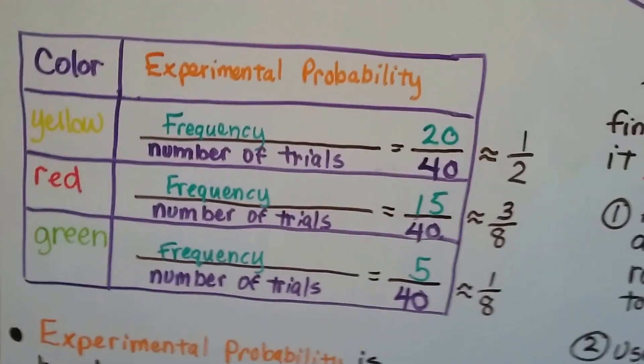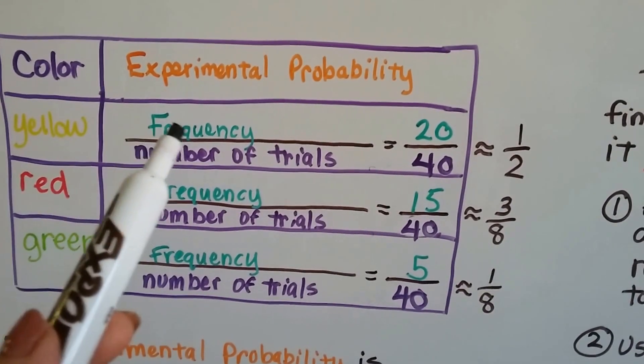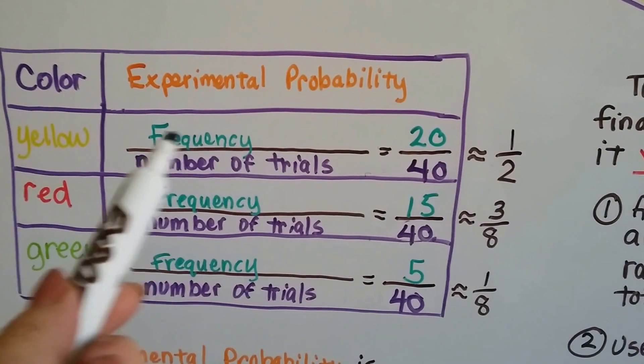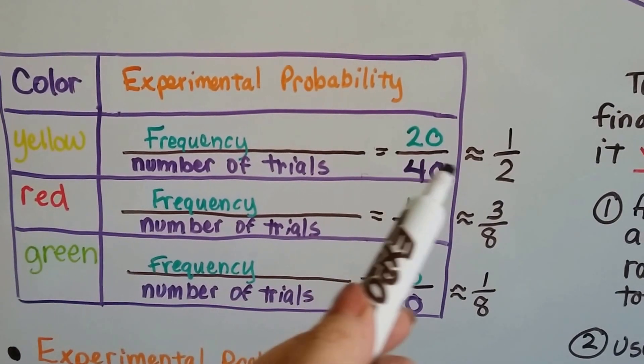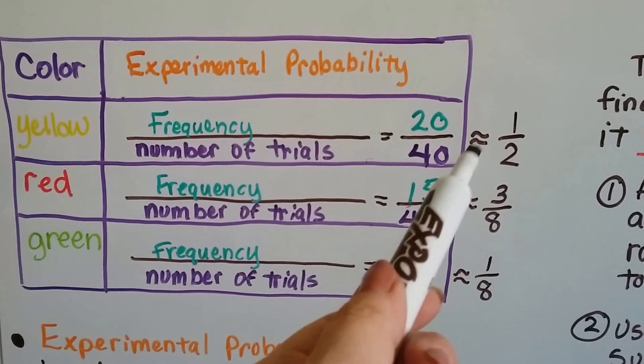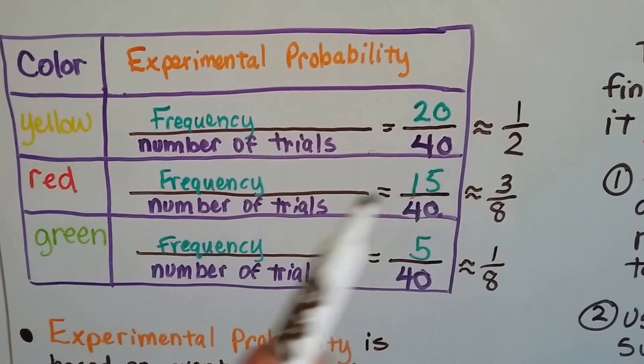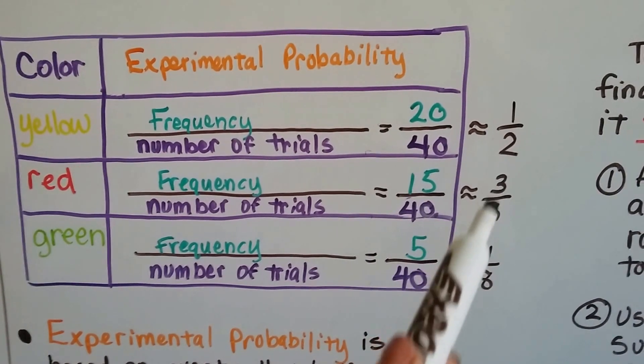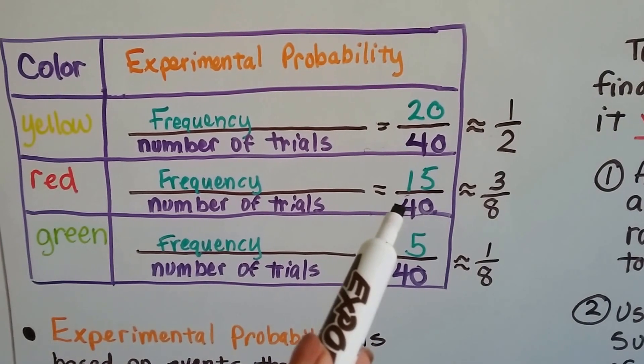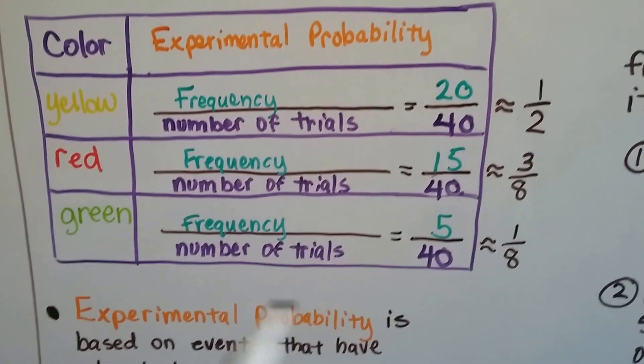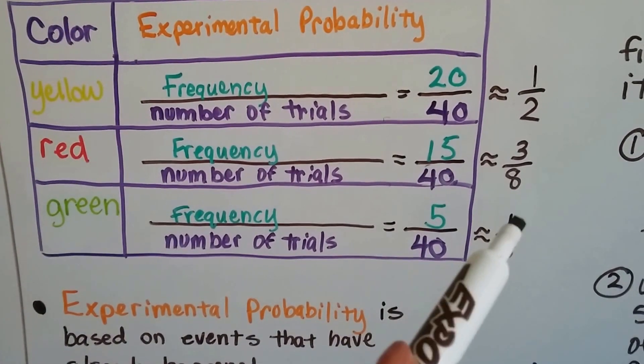So here's our colors, yellow, red, and green, and our experimental probability. The frequency of it landing on that one, on yellow it was 20, and the number of trials was 40. So 20 over 40 is approximately a half. Now, I'll explain why it says approximately. The red one, it landed on 15 times. That was the frequency, and the number of trials is 40. So that's approximately three-eighths of the time. Because five goes into that three times, and five goes into that eight times. So it makes it three-eighths. Green, the frequency over the number of trials, was five over 40, or one-eighth.